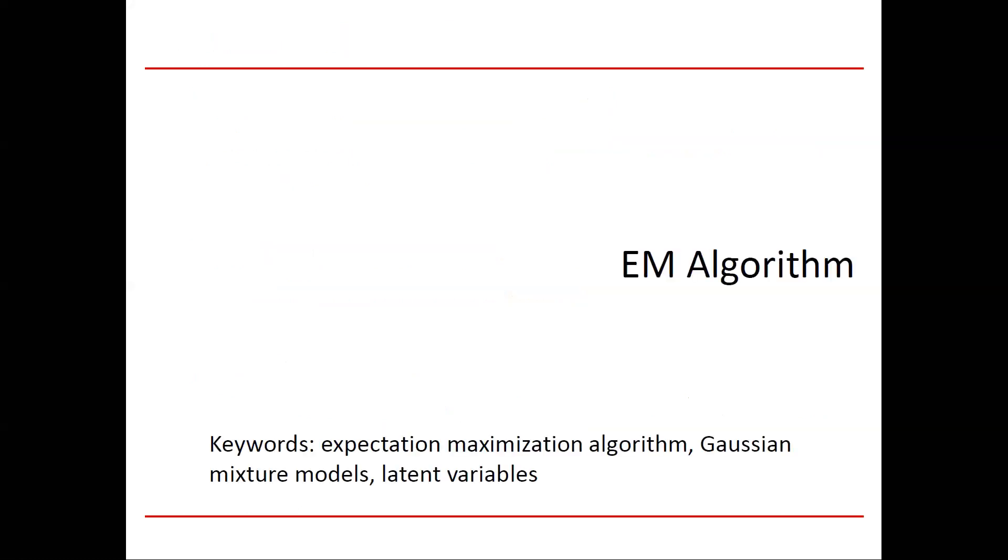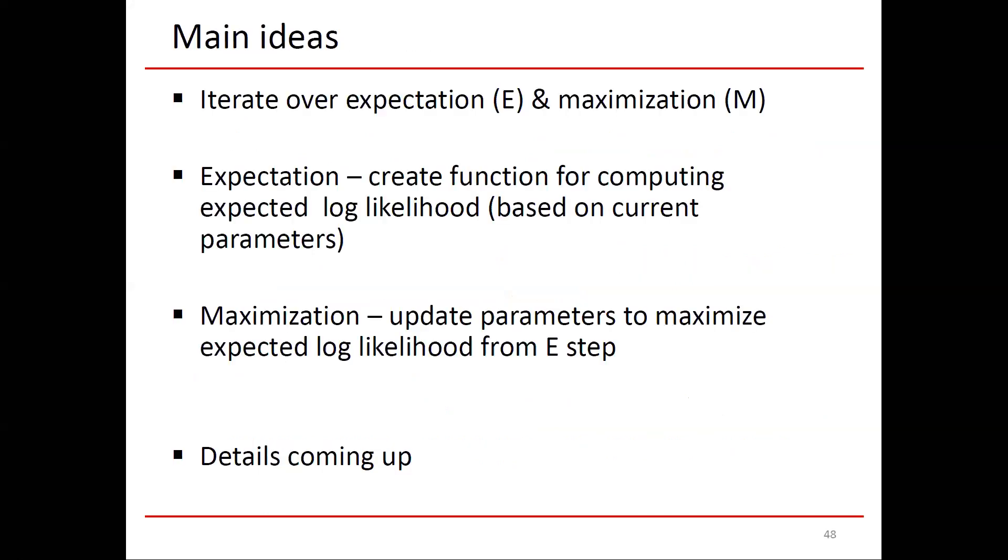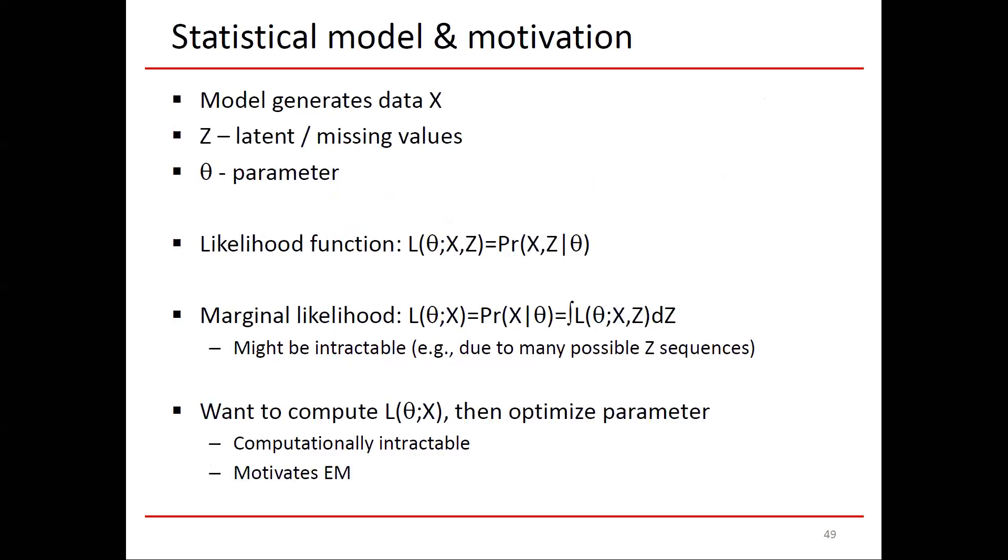Having completed MCMC, that's one type of optimization algorithm for non-convex functions. Another approach is the EM algorithm. In the EM algorithm, we're iterating over two steps: an expectation step, denoted by E, and a maximization step, denoted by M. In the expectation step, we create a function for computing the expected log likelihood based on current parameters. In the maximization step, we're updating the parameters.